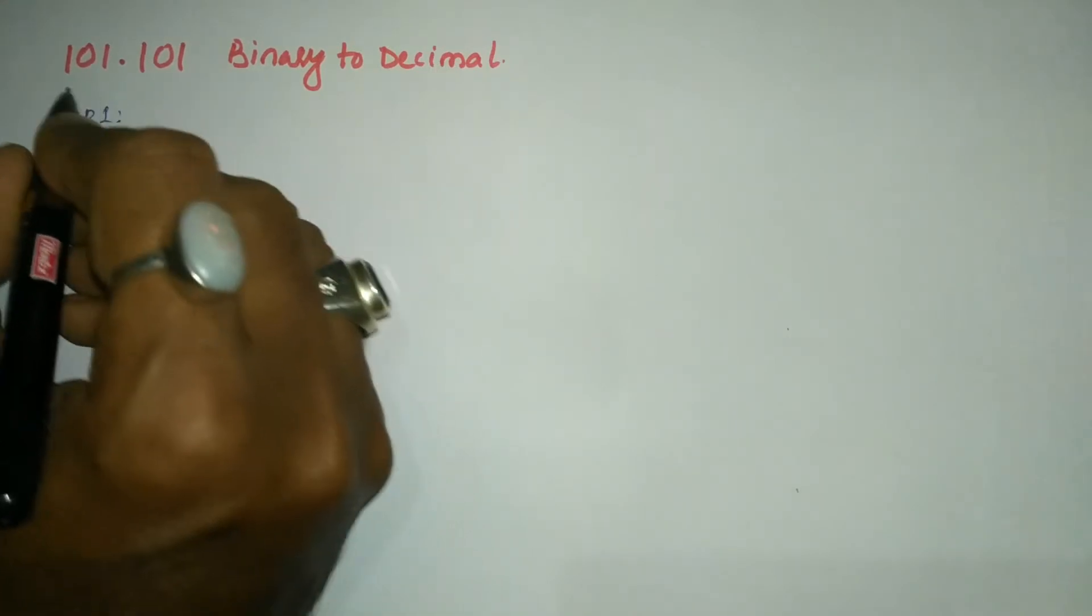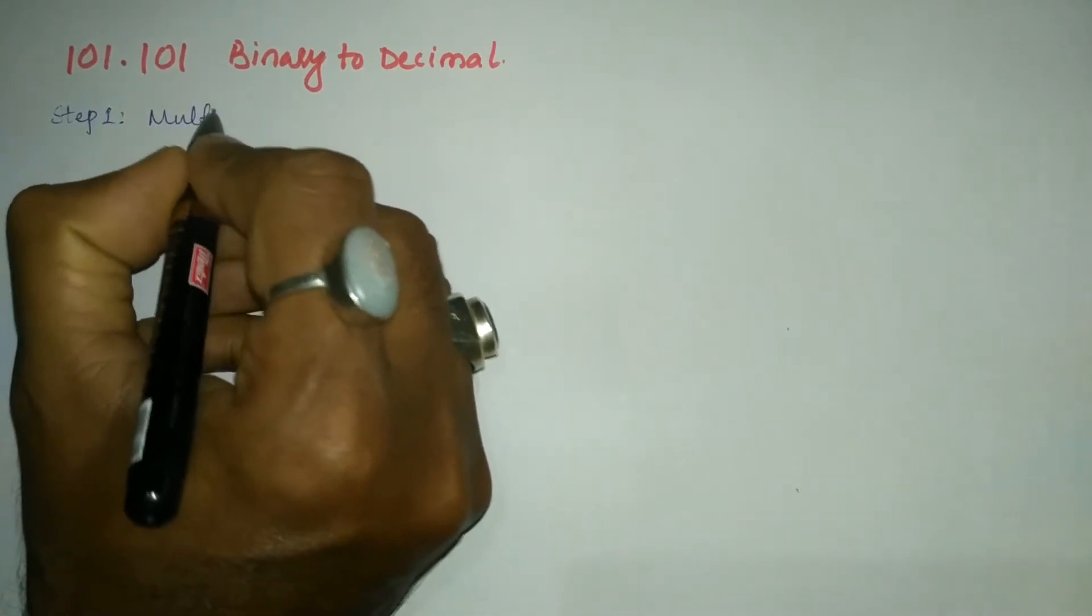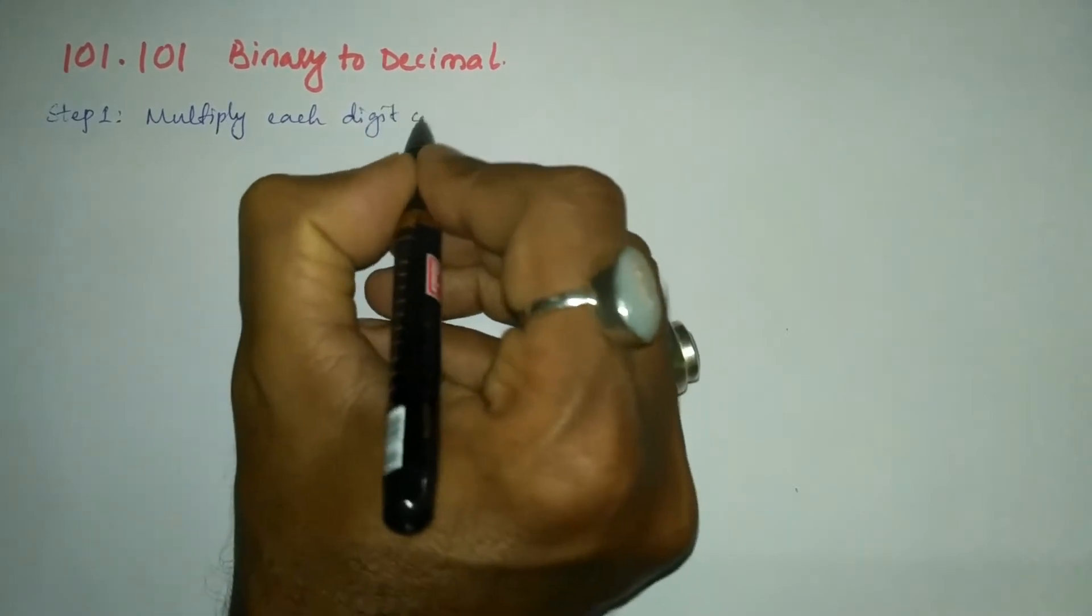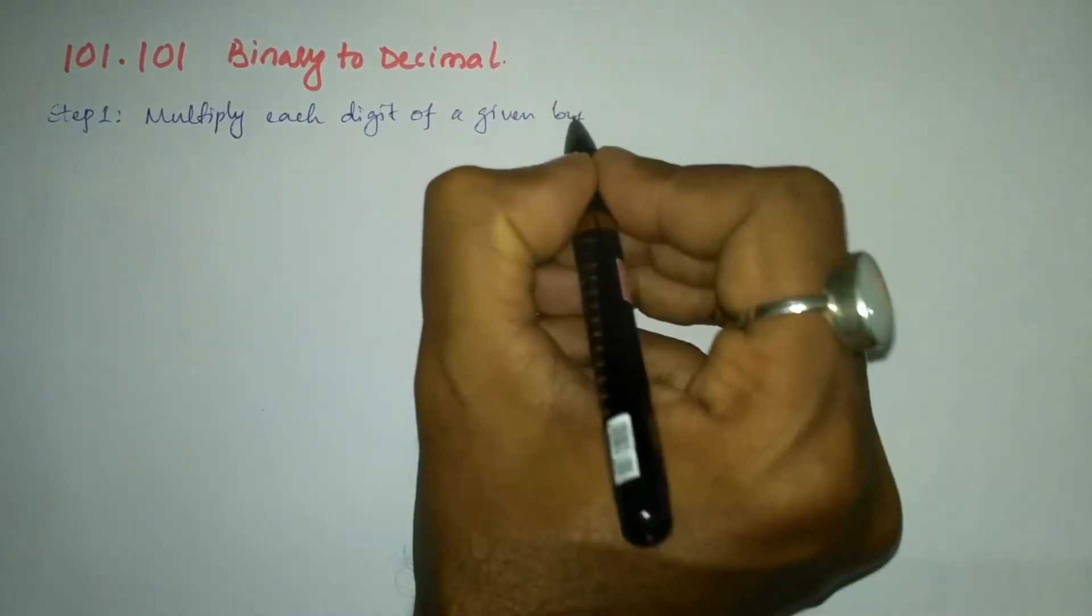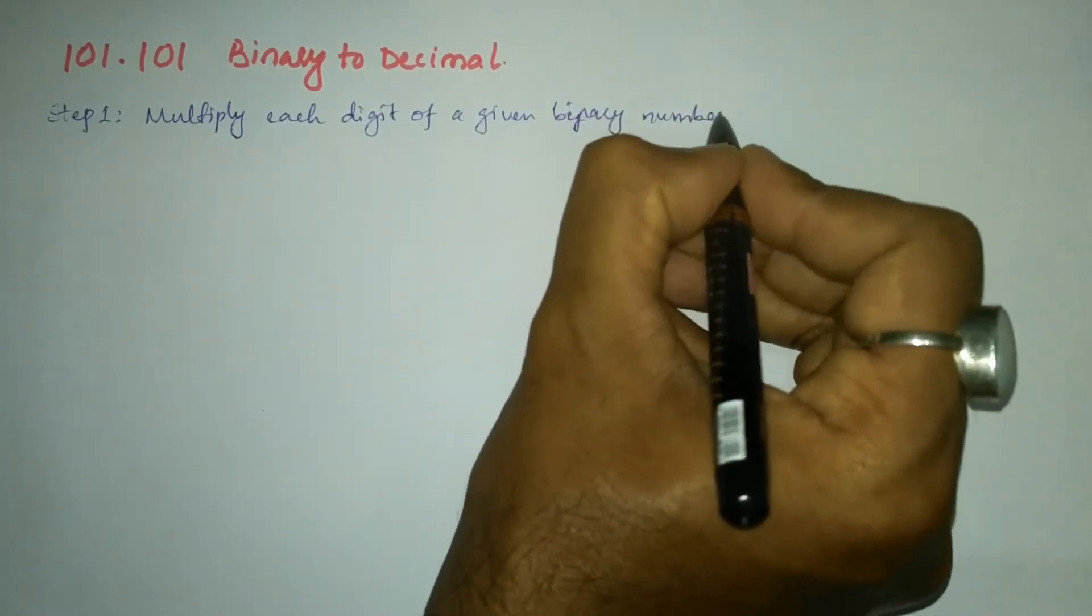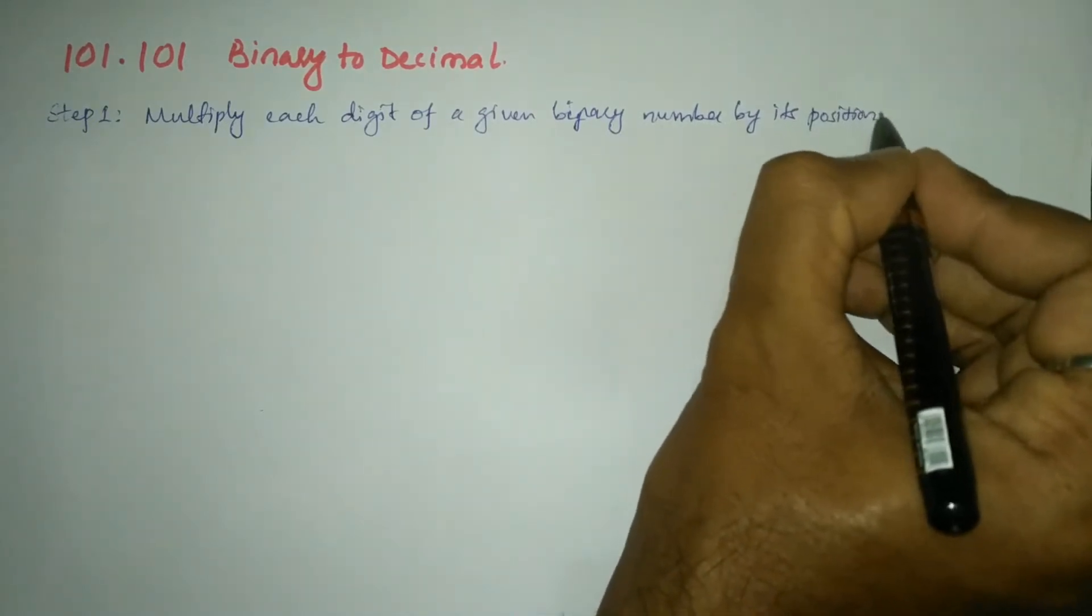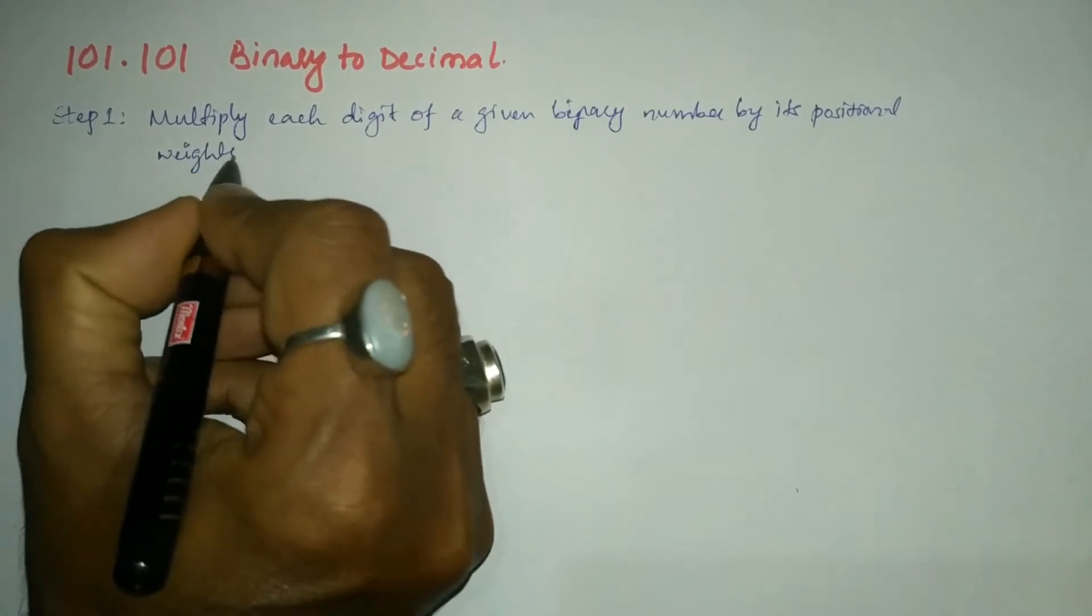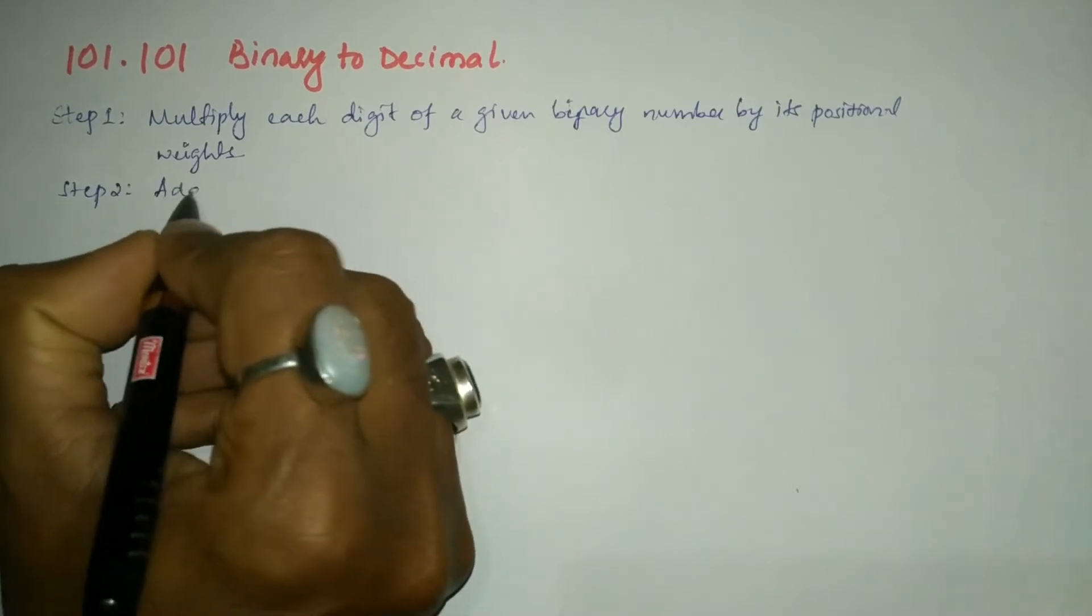In the first step, we have to multiply each digit of a given binary number by its positional weight. Next, step two: add all the products.